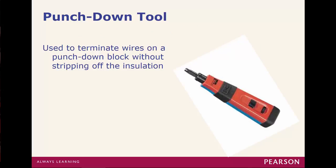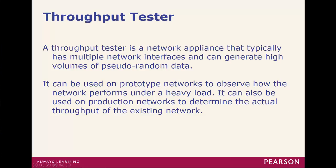We also have a punchdown tool. If we are terminating a patch panel, we're going to use this. If we're terminating phone lines, it's the same tool but different end. A throughput tester is another one of those types of items that will generate high volumes of traffic — could be random — but this allows you to see how your network responds to a certain load.